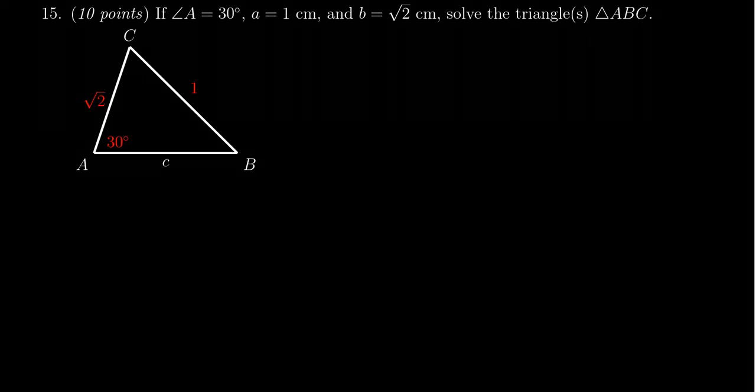In this video, we provide the solution to question number 15 for practice exam number 3 for Math 1060. We have to solve the triangle ABC where we know angle A is 30 degrees, side length a equals 1 centimeter, and side length b equals the square root of 2 centimeters.